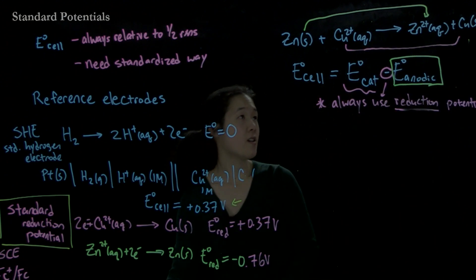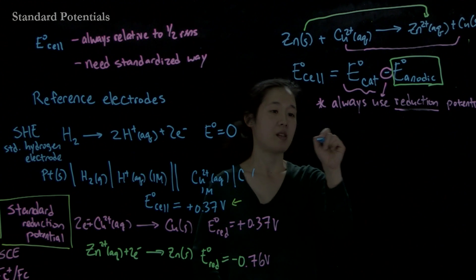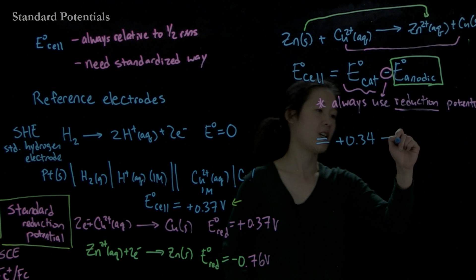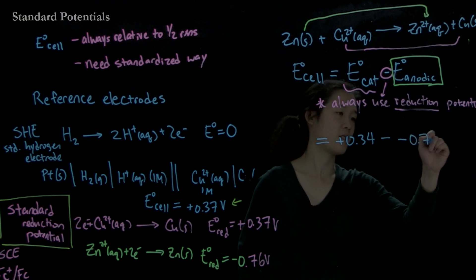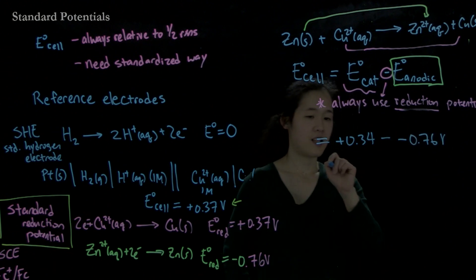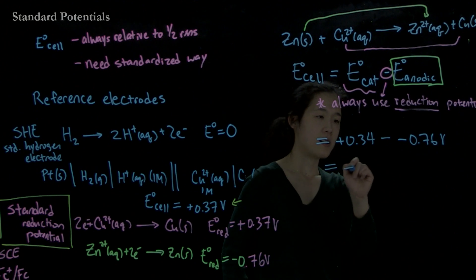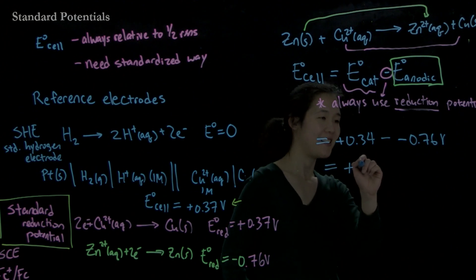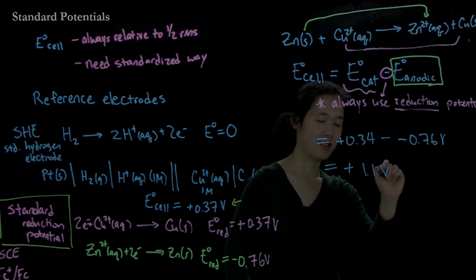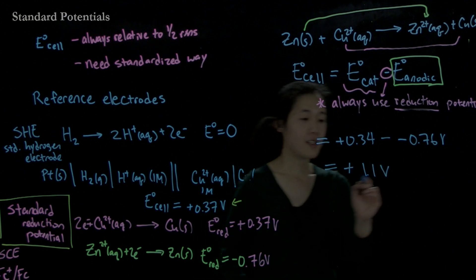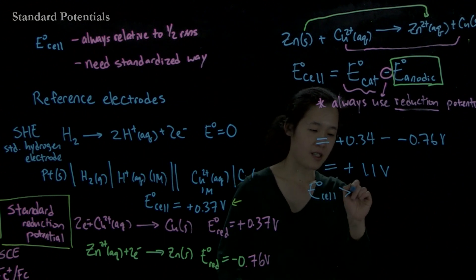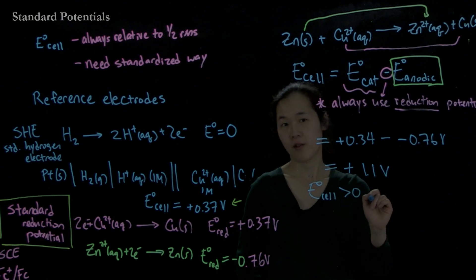So because of that, then we know our E cell is going to be positive 0.34 minus negative 0.76 volts. And then this equals positive 1.1 volts. So overall, this E standard cell potential is now greater than 0. So this cell is spontaneous, just like we've been talking about.